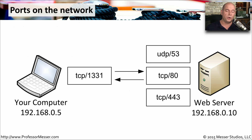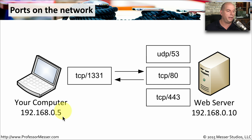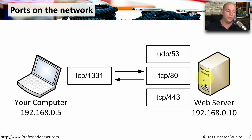Here's a practical example: there is a web server at IP address 192.168.0.10. This web server runs web services over the well-known port TCP 80, encrypted web services over TCP 443, and DNS services over UDP 53. A client device at 192.168.0.5 that needs to communicate to the web server over non-encrypted HTTP will find a temporary ephemeral port — in this case TCP 1331 — and communicate to the web server on TCP 80. When the session is over, it's closed, and a different temporary port number is chosen for the next session.